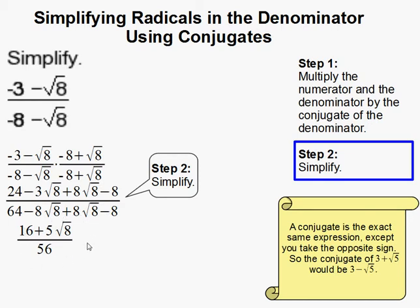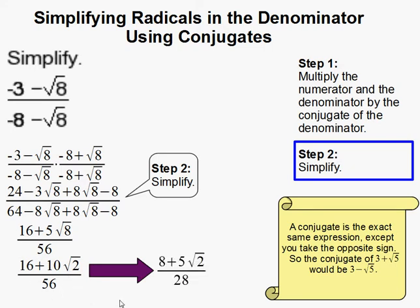Now we need to simplify this even more. Because the square root of 8 is actually 2 root 2, so that's how I got 10 root 2 here. And I can divide everything by 2, so that gives me this as the final answer.